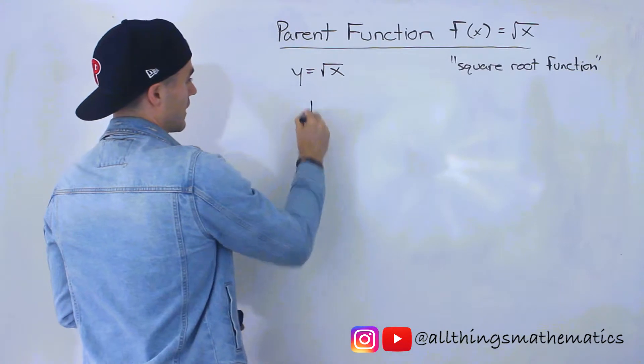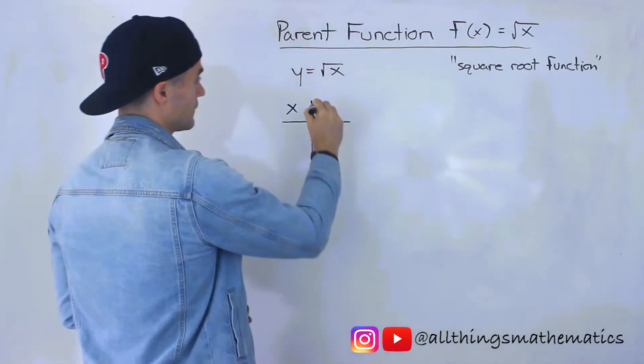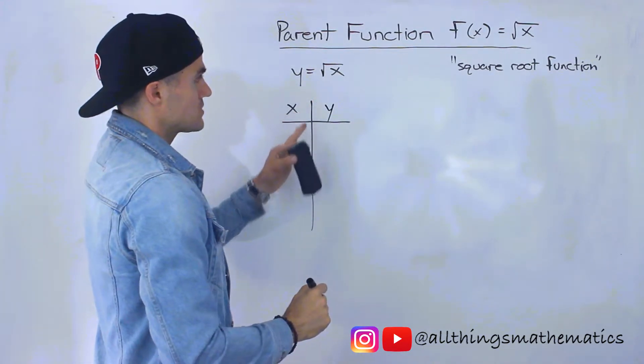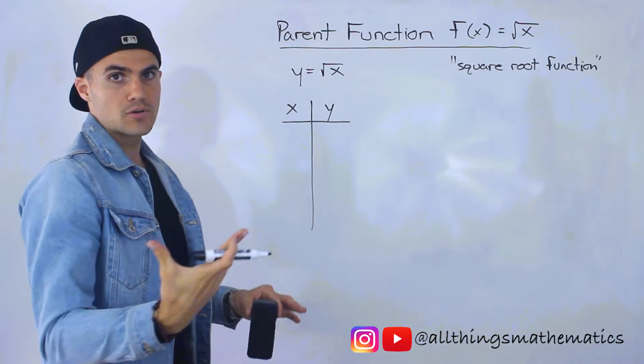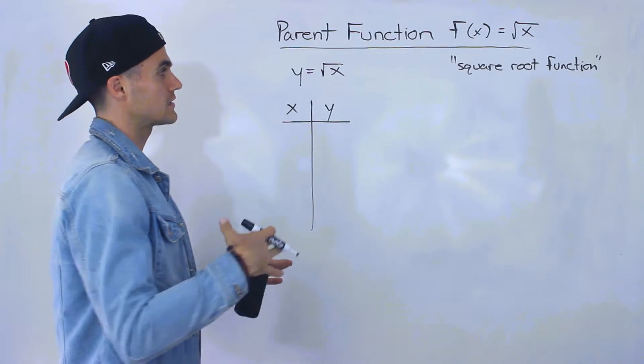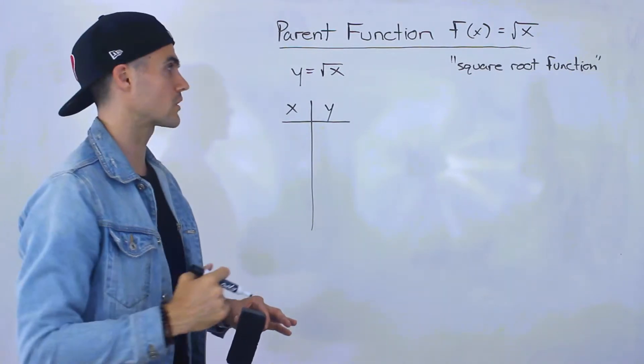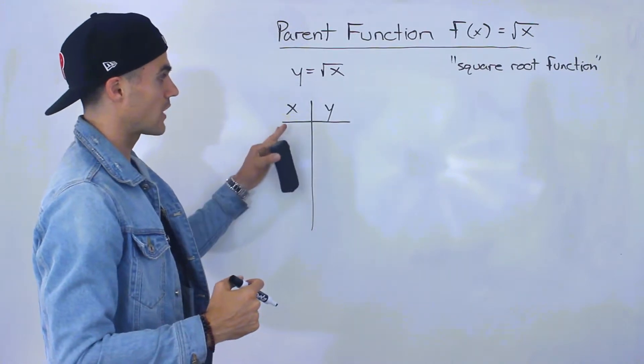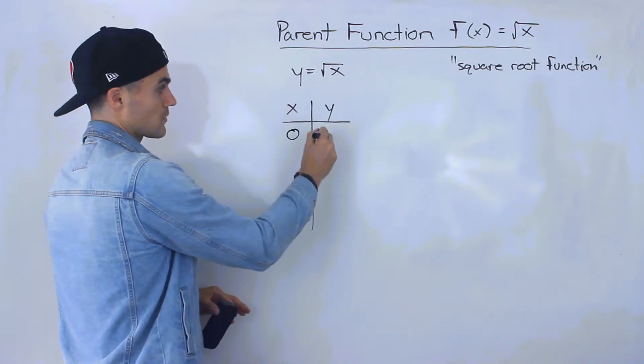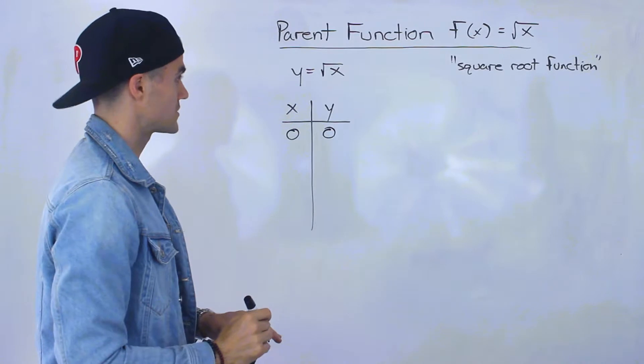So let's make a table of values for this and see how it's going to look on a graph. Now notice that all of the x values have to be greater than or equal to 0. Notice the x values can't be negative because you can't square root a negative number. If you tried to take like the square root of negative 4, you'd get undefined in your calculator. So all the x values have to be greater than or equal to 0. They could equal 0 because the square root of 0 is just going to be 0, and then the rest of the numbers have to be positive.